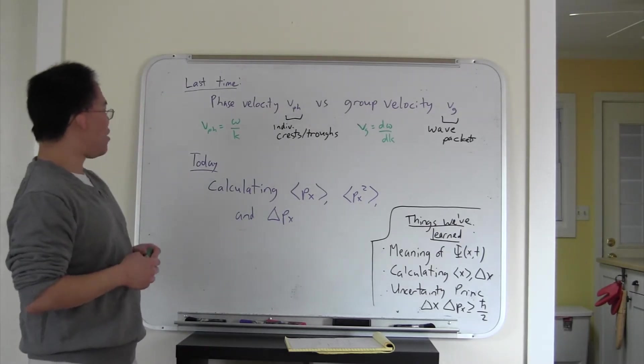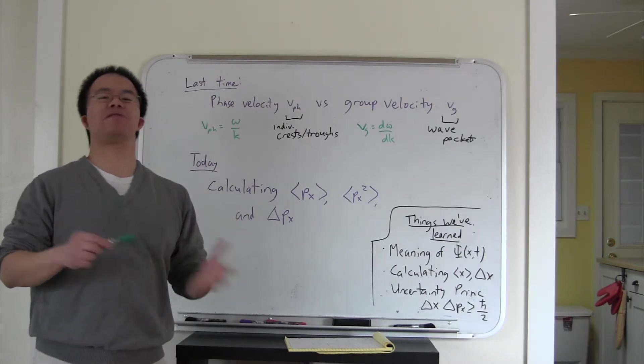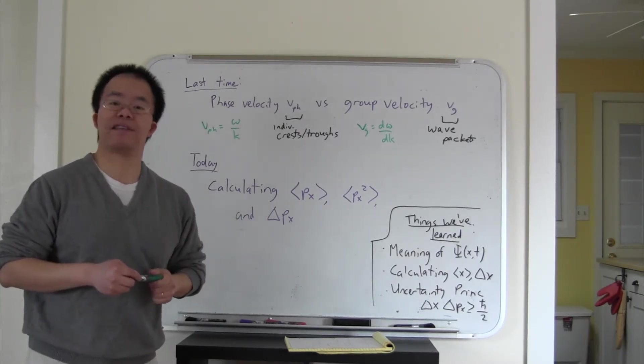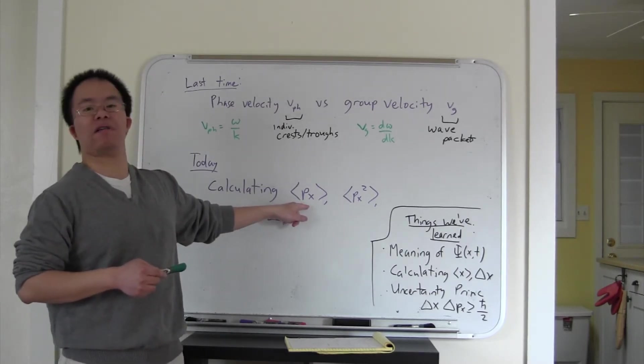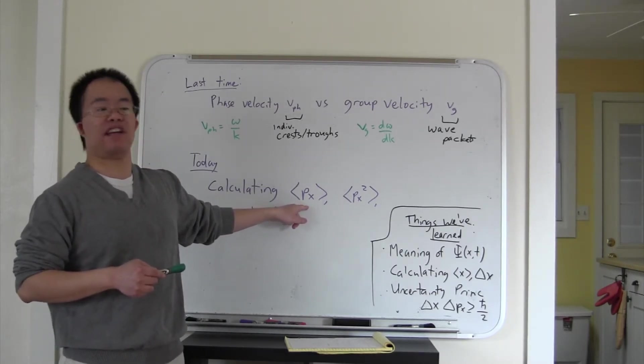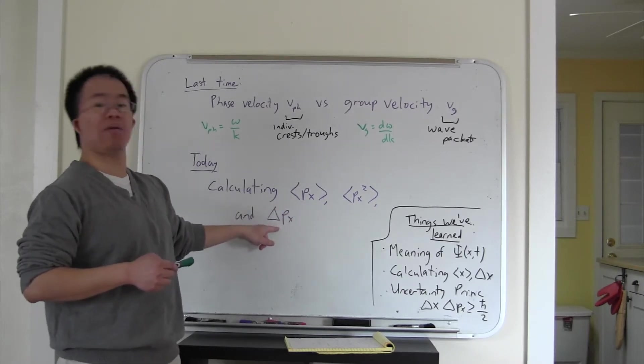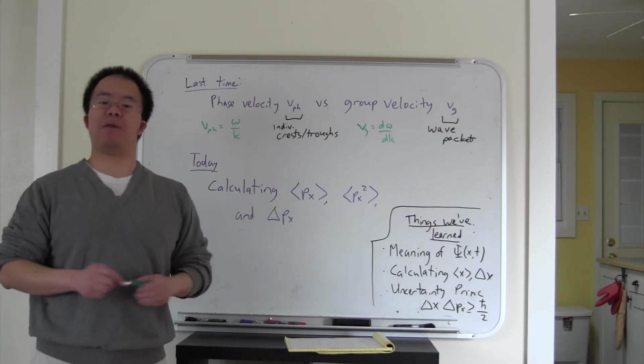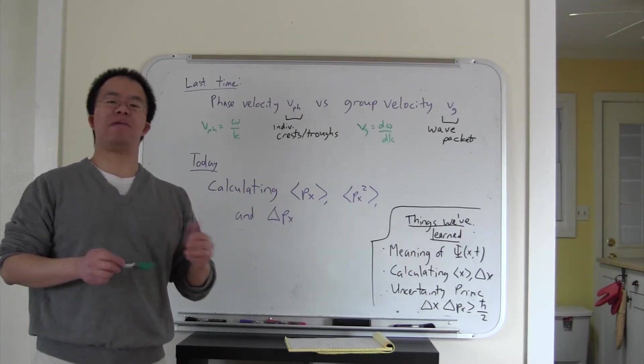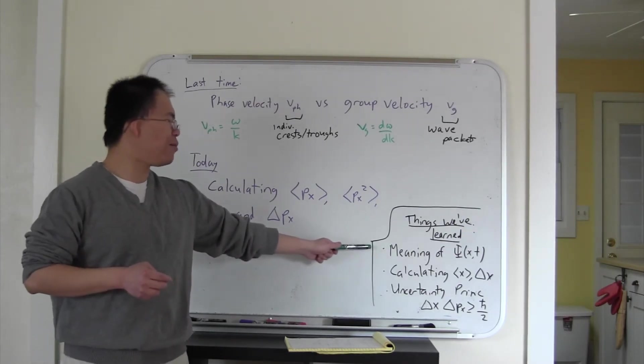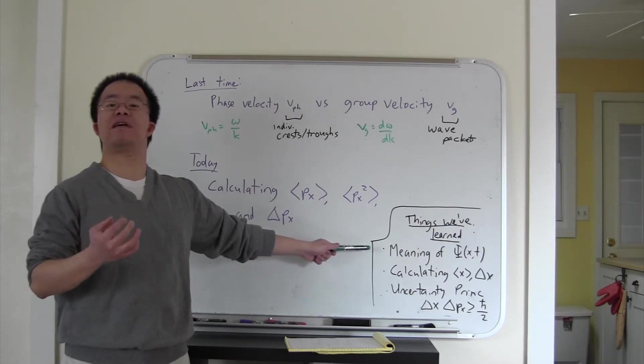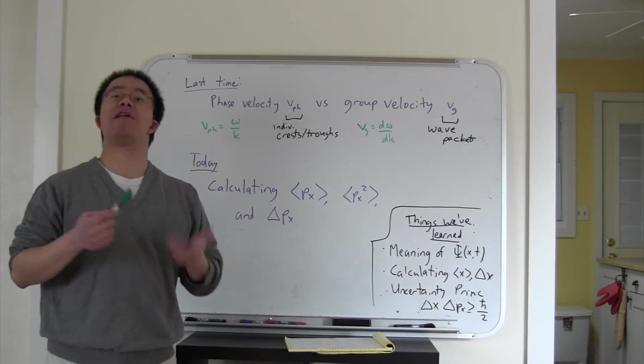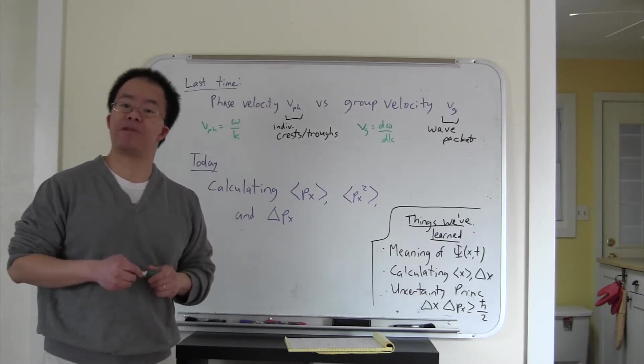Today what we're going to do is we're sort of going to close the loop with the beginnings of our studies of quantum mechanics. In particular, we're going to talk about how to calculate momentum expectation values. And that will help us be able to calculate the uncertainty in momentum given a wave function. This is sort of a big gap so far, because last time we've learned about the physical meaning of the wave function psi of xt, as well as its governing equation, the Schrödinger equation.